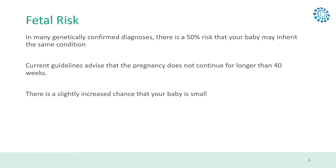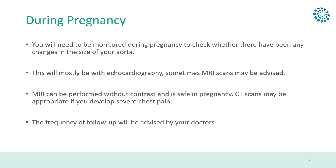Because of the risk of aortic dissection and rupture, current guidelines advocate that pregnancy should not continue for longer than 40 weeks. Your obstetric and cardiology team will discuss with you the balance of risks of induced delivery versus waiting for natural labour, depending on your individual circumstances. There is a slightly increased risk that your baby may be small. During pregnancy, it is important that you are monitored regularly by a specialist joint cardiac and obstetric team. The frequency will be determined by your team and may change during the course of the pregnancy if there are signs of growth of your aorta. The assessment of your aorta will mostly be with echocardiography, but sometimes an MRI scan during pregnancy may be advised.